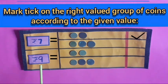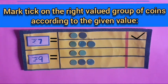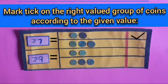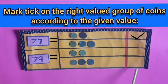Tell me children, what is it written? Yes, it is written rupees 9. Let's see the value of which coins is equal to the value of rupees 9. 5 and 5 — 10 rupees. 5 and 2 — 7 rupees, 7 and 2 — 9 rupees. The value of these coins is equal to the value of rupees 9. We will mark tick on it.